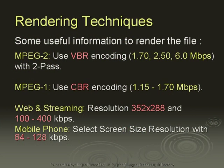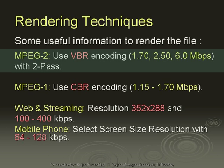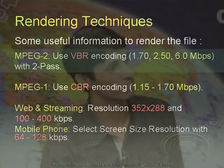These are the rendering formats: DVD, VCD, high-definition digital disk, web and streaming, and mobile phones. Some useful techniques for rendering MPEG-2: always use VBR (variable bit rate). Use a minimum bit rate of 1.7 — not the default, but recommended. Target bit rate is 2.5, and we have discussed minimum, target, and maximum bit rates used in VBR in our previous session.